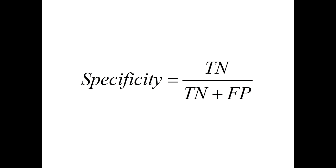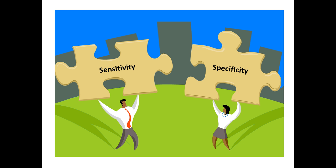Computationally they're pretty simple, but the application is a little bit more nuanced. The first thing we need to remember in applying these concepts is that we absolutely need both of them together. You cannot evaluate sensitivity without looking at specificity, and you cannot look at specificity without evaluating sensitivity as well. The two measures always must be evaluated together.